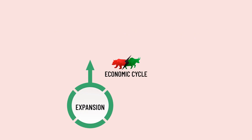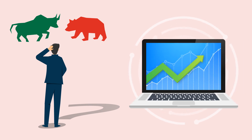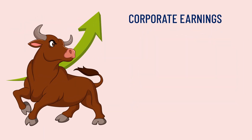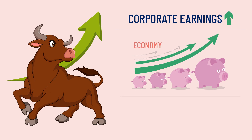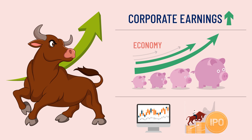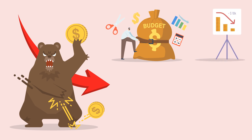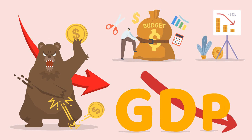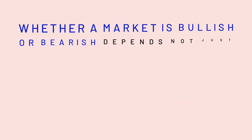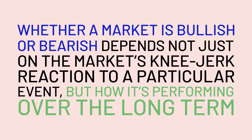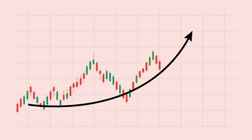Bull and bear markets often coincide with the economic cycle consisting of four phases: expansion, peak, contraction, and trough. In a bull market, corporate earnings increase and the economy grows as consumers tend to spend more due to the wealth effect. In a bear market, consumers reduce their spending, leading to lower sales and a fall in business profits, negatively impacting GDP. Whether a market is bullish or bearish depends not just on knee-jerk reactions to a particular event, but on how it's performing over the long term — small movements represent only short-term trends or corrections.